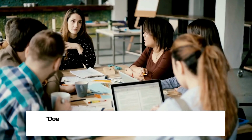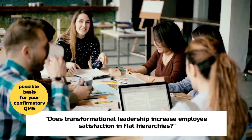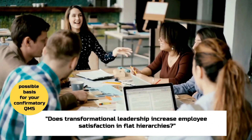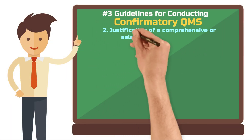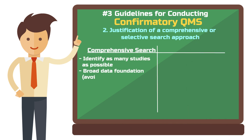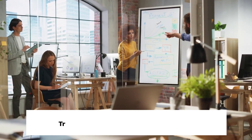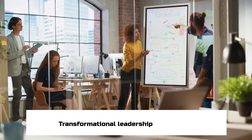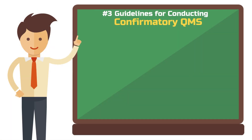An example: does transformational leadership increase employee satisfaction in flat hierarchies? This hypothesis could form the basis for your qualitative meta-study. Second step: decide whether to conduct a comprehensive search, aiming to include as many relevant studies as possible, or a selective search, focusing on high-quality studies that align closely with your research question. For example, if you're studying the impact of transformational leadership in startups, you might specifically look for case studies from that context.